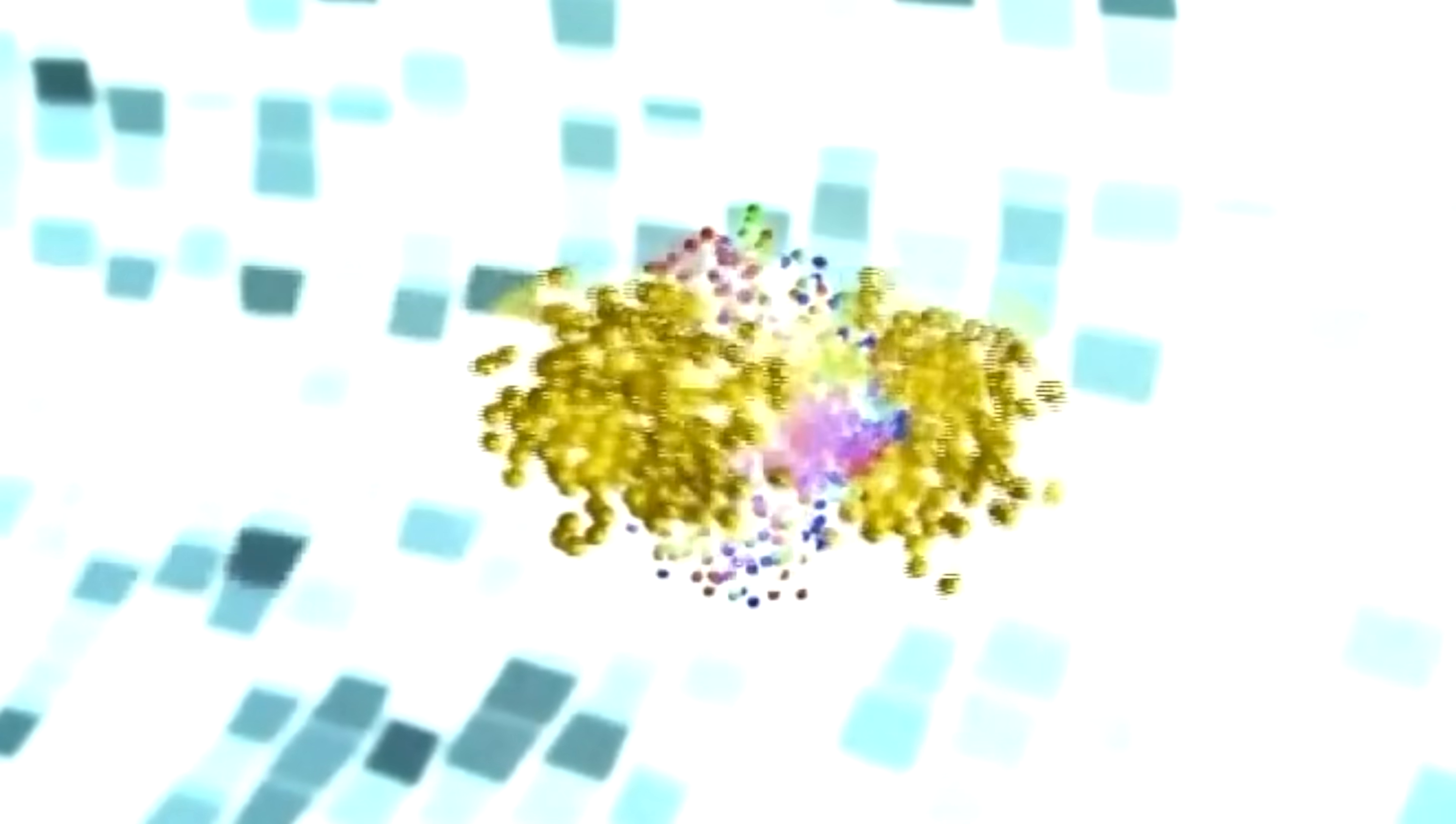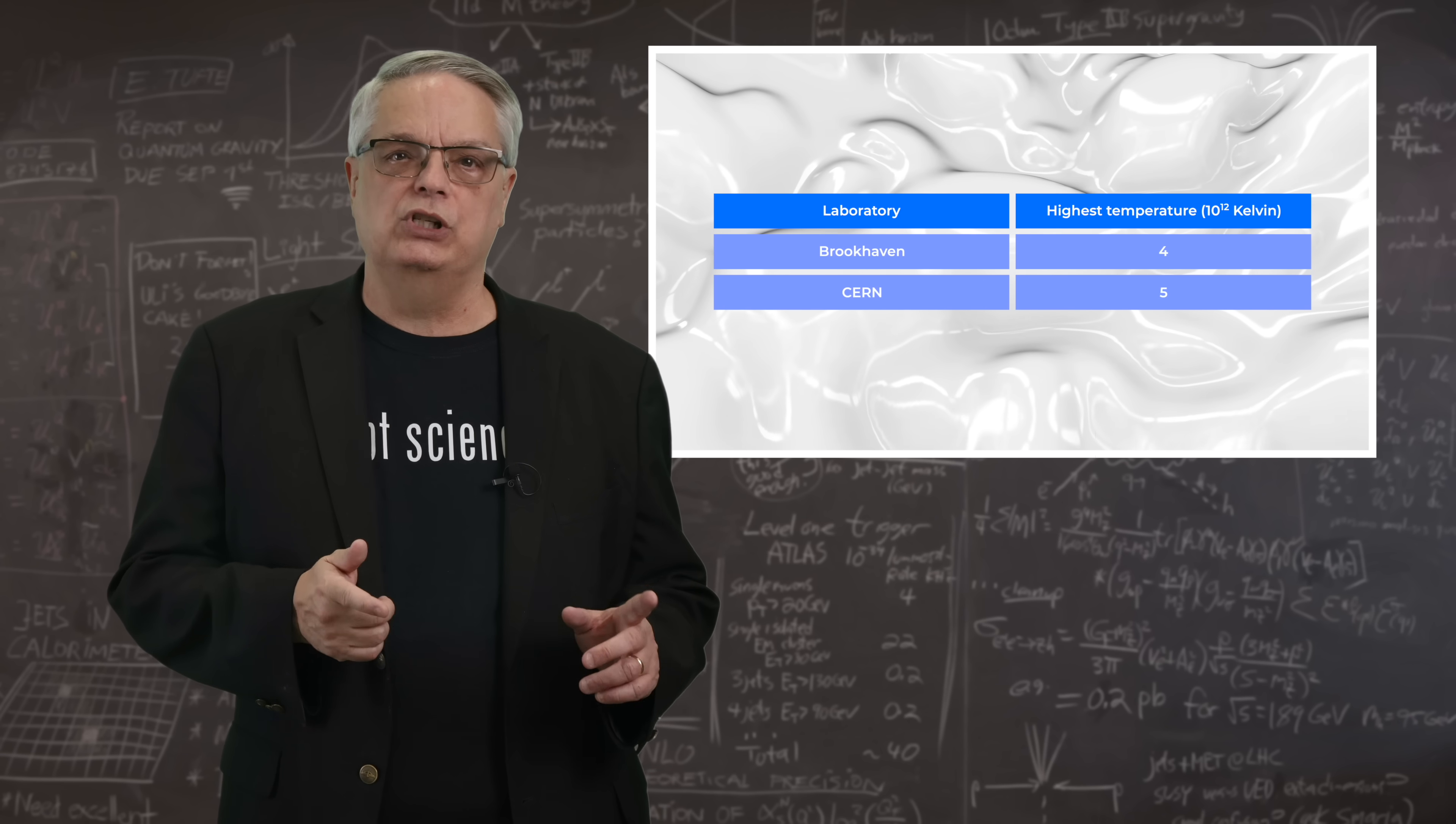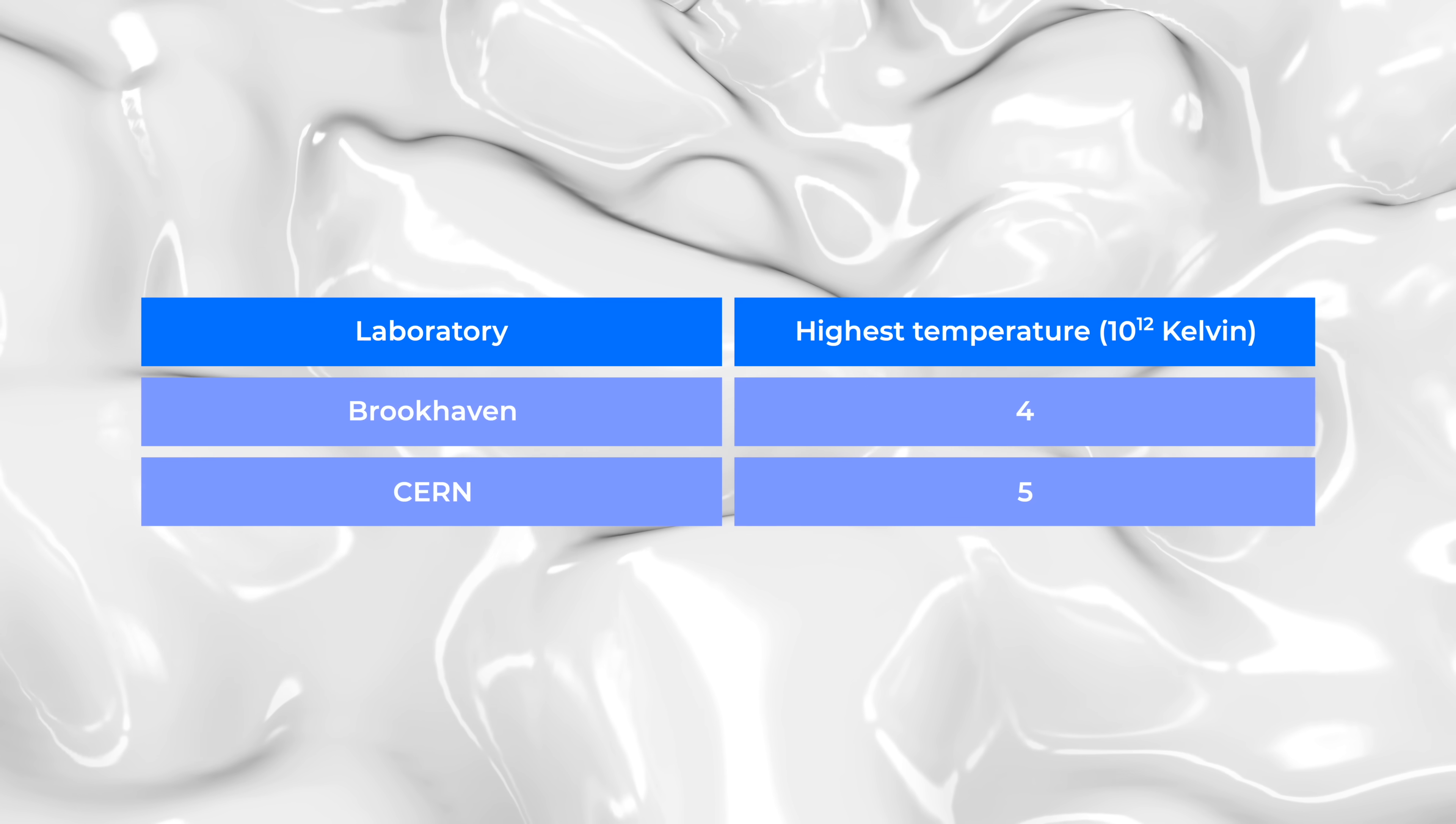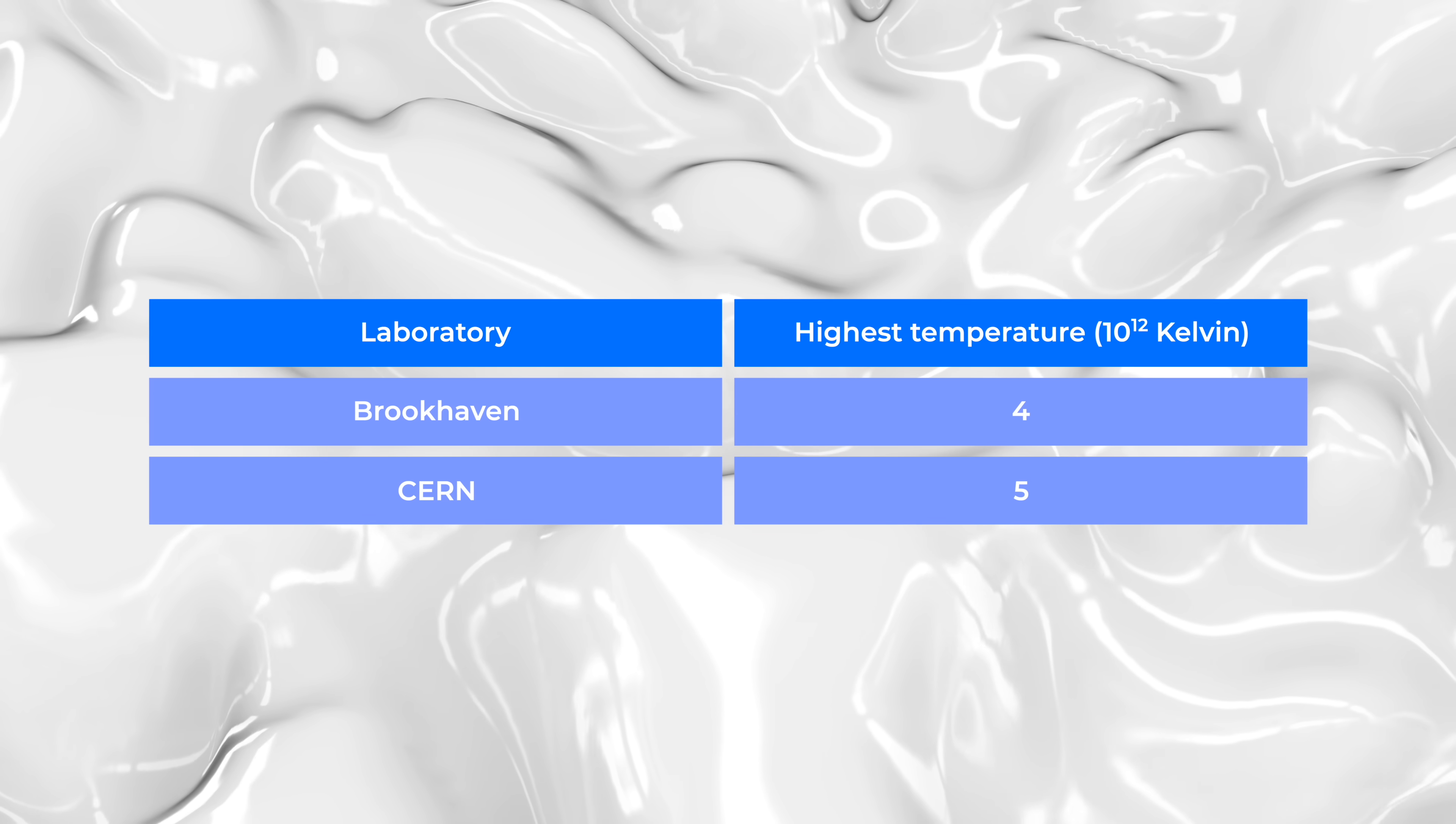The Brookhaven and CERN accelerators also collide not individual protons, but large nuclei, specifically gold at Brookhaven and lead at CERN. The highest temperatures achieved at Brookhaven in these nuclear collisions was 4 trillion Kelvin, and at CERN it's closer to 5 trillion Kelvin. The last time these temperatures were common in the universe was just over a millionth of a second after the universe began.